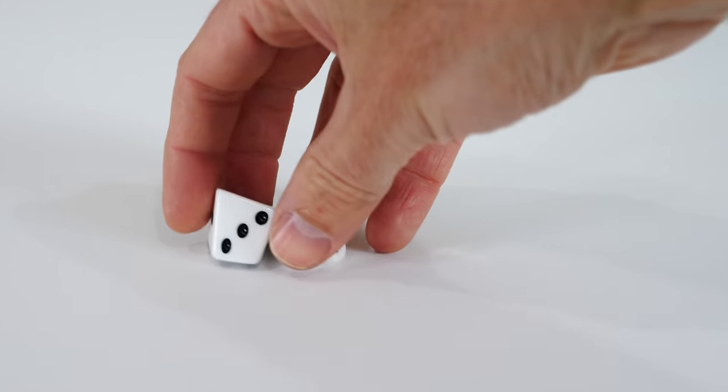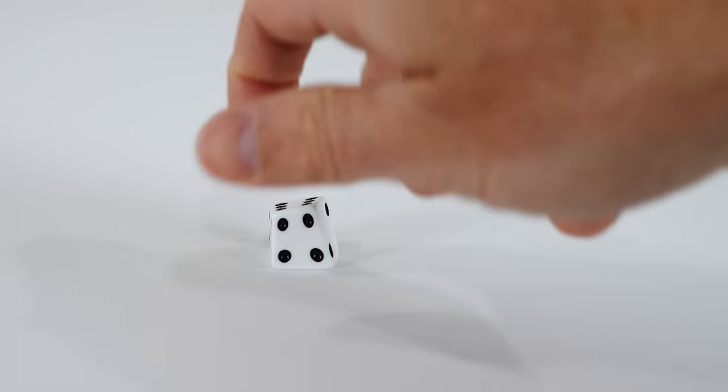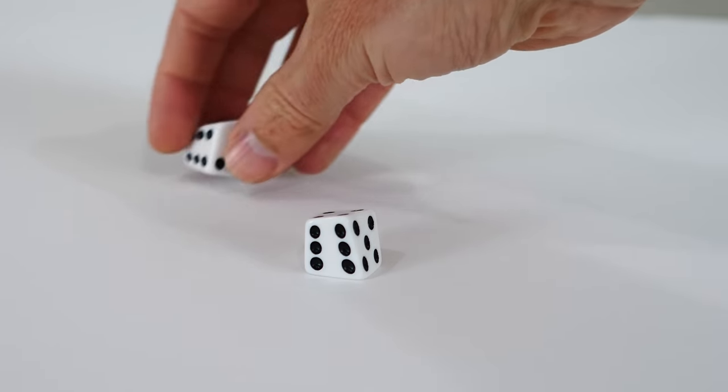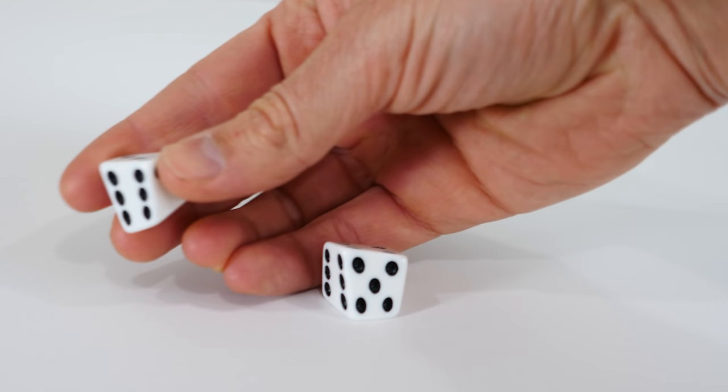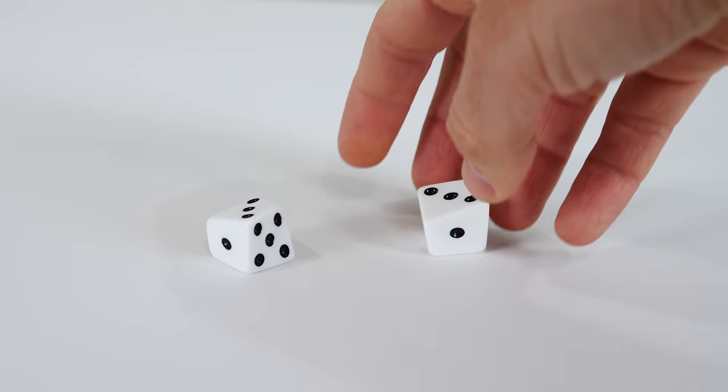The shapes of these dice are called asymmetric trigonal trapezohedrons. And the pair here are actually mirror images of each other. Every face of these is exactly the same width as the other face, and so they have the same probability of landing on any face.